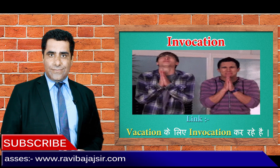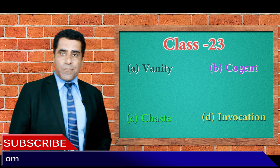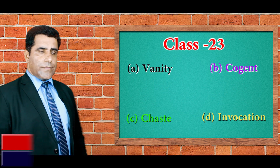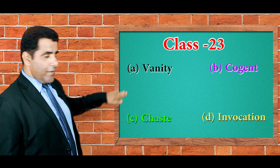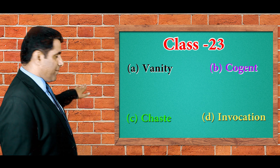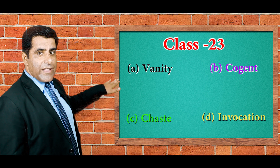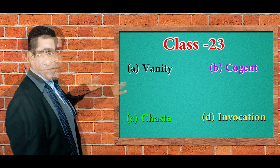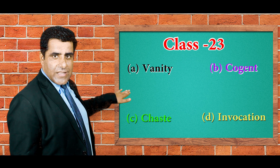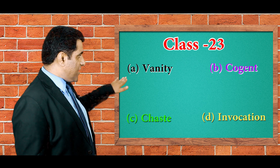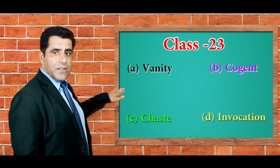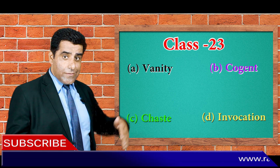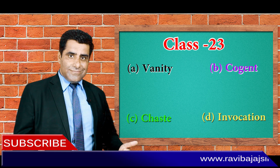Aayiye charo words ko revise kar lete hain. Vanity — ghamand, link word: Vinita. Cogent — convincing reply, link word: company's agents. Chaste — pativrata, link word: chest. And the last word is Invocation — prarthana, link word: vacation.